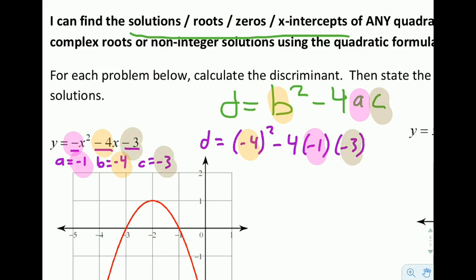When calculating the discriminant, I'm going to plug these values into the formula. The discriminant equals b squared — I'll always use parentheses when squaring negative numbers — minus 4 times a, which was negative 1, times c, which was negative 3. That gives us positive 16 minus negative 4 times negative 1 times negative 3. Negative 4 times negative 1 is positive 4, times negative 3 is negative 12.